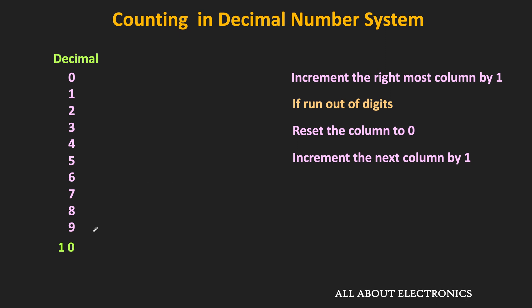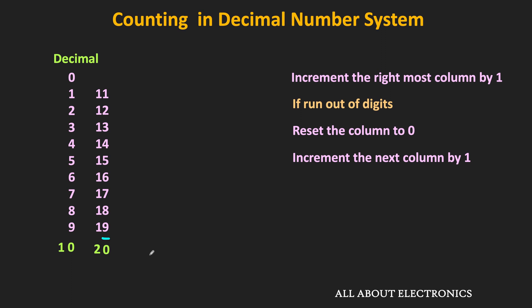Once again, we follow the same procedure — increment the rightmost column by 1, while all remaining columns are kept as they are. In the rightmost column, since it is 0, the next number will be 1, and in this way we can go up to 19. After 19, once again the rightmost column runs out of digits, so we reset that column and increment the next column by 1, meaning the next number is 20. Following the same procedure, we can reach up to 99.